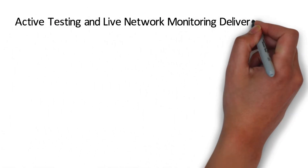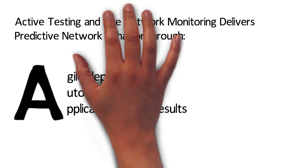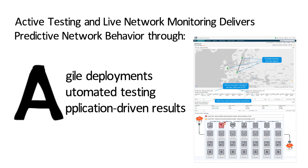Active testing and live network monitoring delivers predictive network behavior through agile deployments that can be provisioned anywhere, versus fixed network appliances in specific locations. Automated testing that's tied to when services are launched or changes occur. And application-driven testing should mimic real-world applications like SAP, email, webcasts, or even shopping experiences.